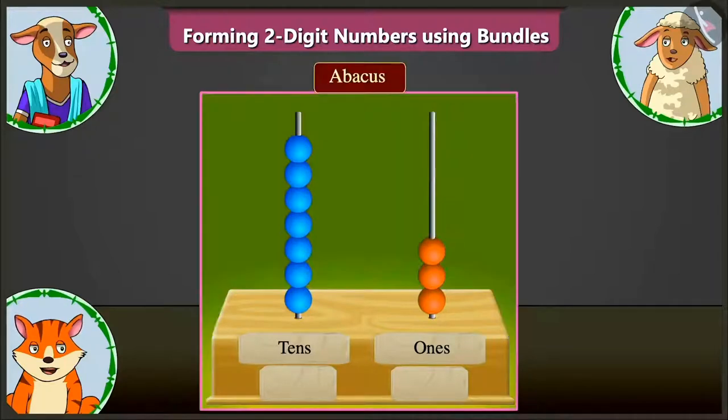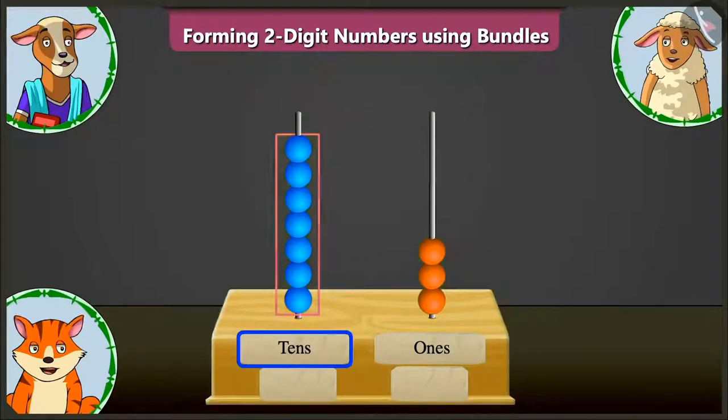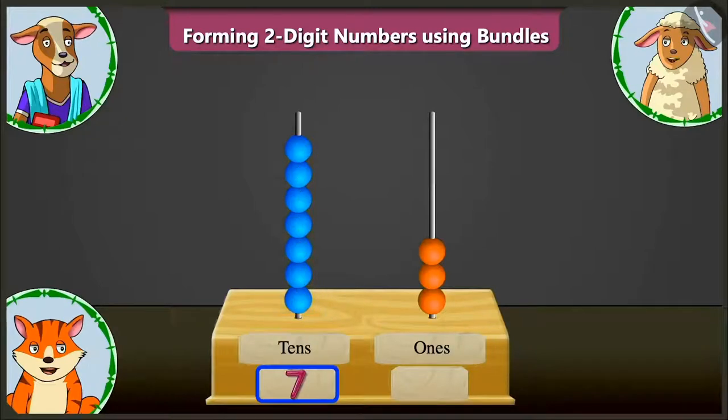In the abacus given here, in the tens box, there are one, two, three, four, five, six and seven beads. So, in the tens box, we have to write seven.